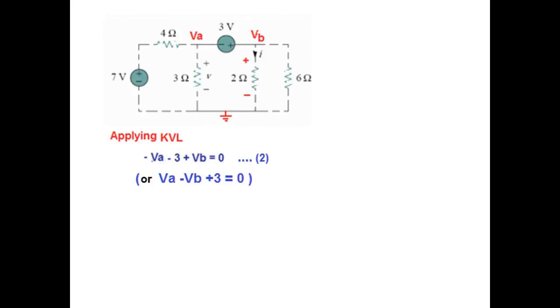Now KVL. So we have taken this as VA and this is VB. So we start from this corner. So negative VA, negative 3V, positive VB. So negative VA, negative 3, positive VB equal to 0.